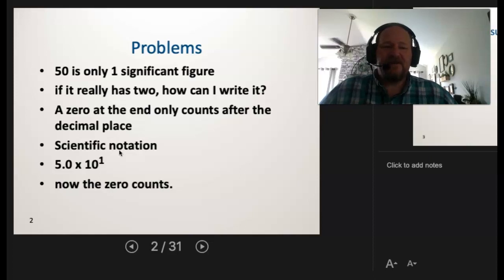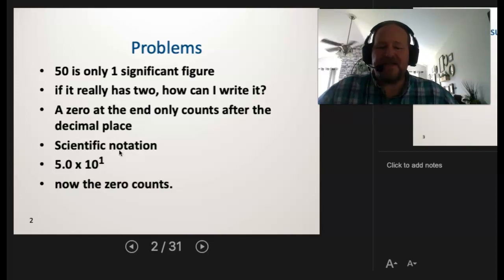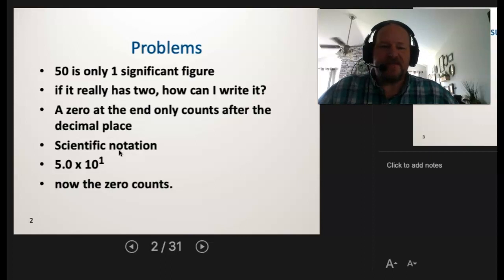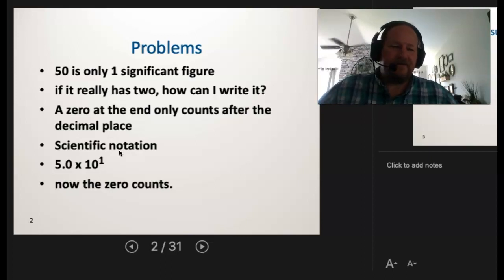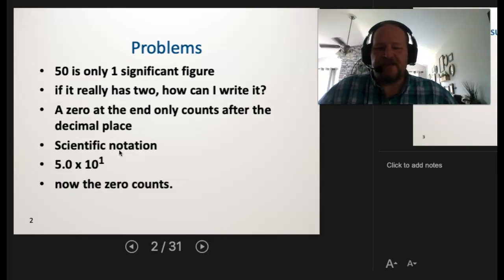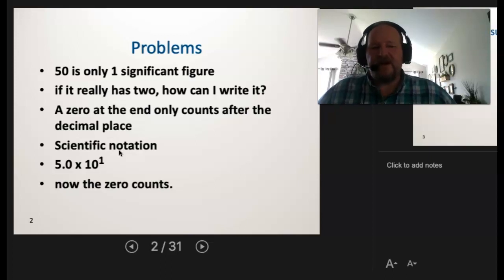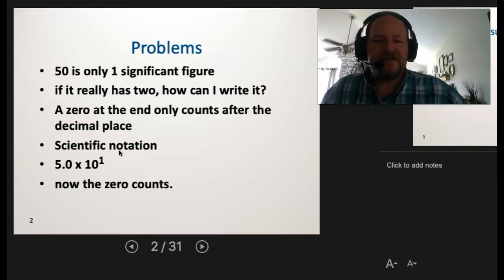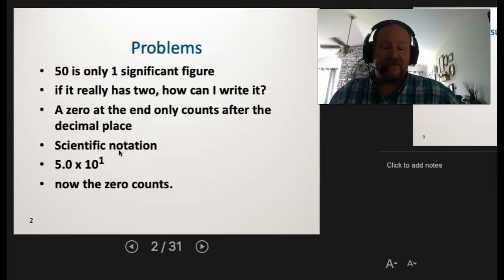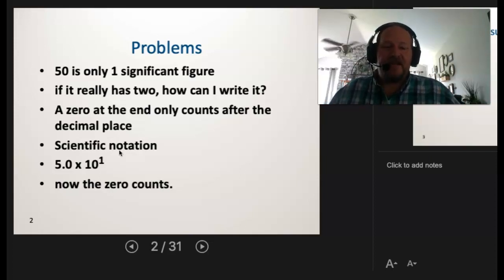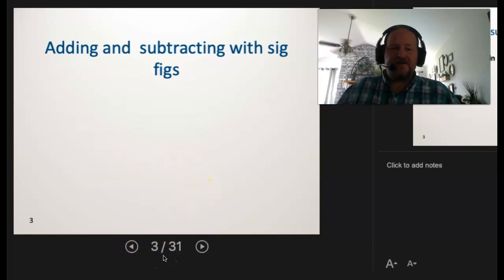Now because that zero follows the decimal point, it's a significant figure and counts. I'll post some practice sets — you need to be able to take a number into scientific notation and move it back out. I typically like to say you're making a big number small or a small number big, rather than saying move the decimal left or right, which can be confusing. If making a big number small, the exponent goes up; if making a small number big, the exponent goes negative.